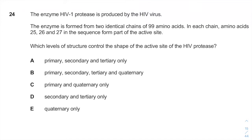The enzyme HIV-1 protease is produced by the HIV virus. The enzyme is formed from two identical chains of 99 amino acids. In each chain, amino acids 25, 26, and 27 in the sequence form a part of the active site.